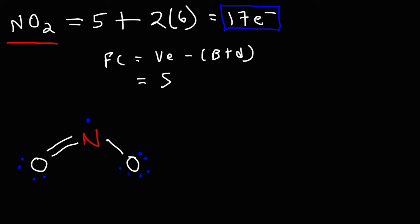So let's calculate the formal charge on the element nitrogen. Nitrogen has five valence electrons. In this structure, it has a total of three bonds, and it only has one dot. So three plus one is four. Five minus four is one. So therefore, the nitrogen atom has a positive formal charge.